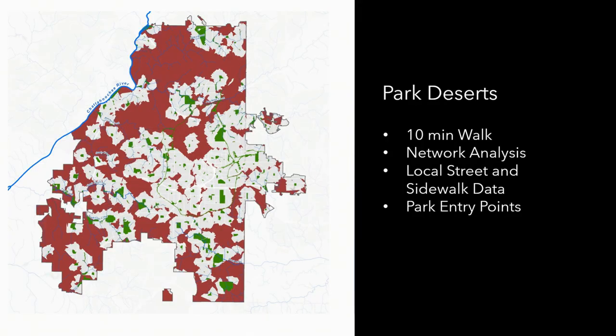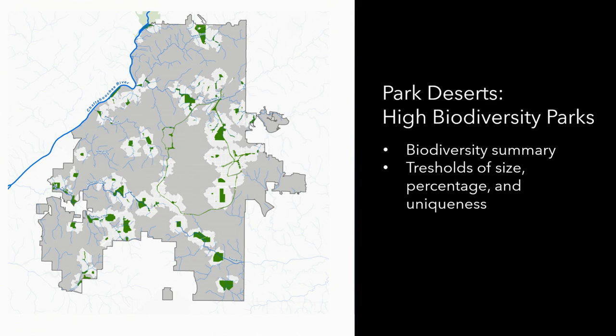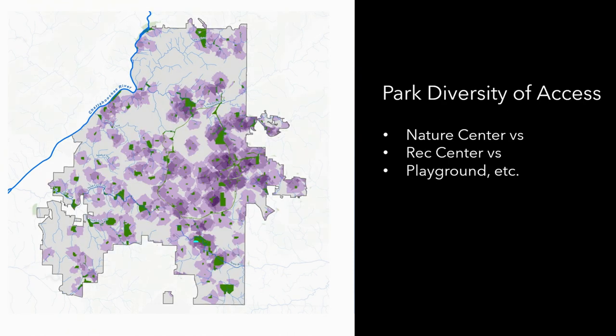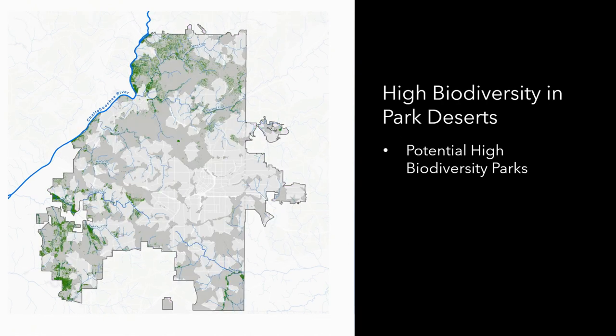For parks and open space, we conducted a 10-minute walk network analysis identifying park deserts in red across the existing park network. We also looked at deserts related to high biodiversity parks — so areas where you may have access to a technical park but not to higher-value wild or urban nature. Recognizing that a nature center is different from a rec center, which is different from a playground, we assessed diversity of park access. We then identified high biodiversity areas within park deserts as priority locations for new parks.